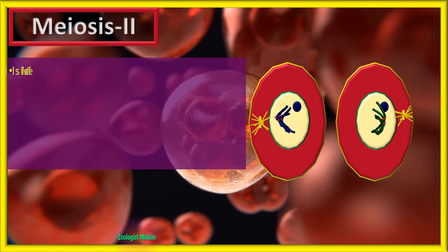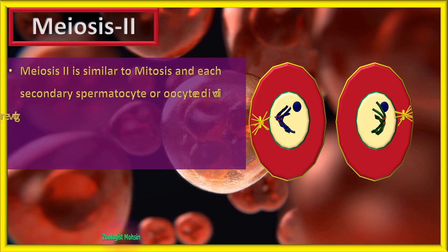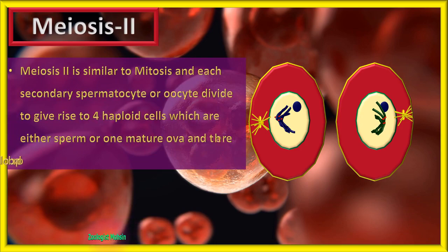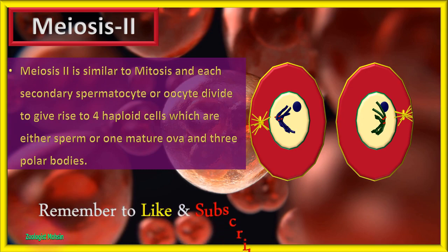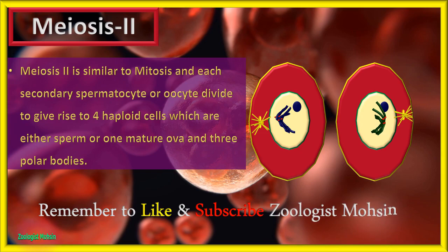Meiosis 2 is similar to mitosis, and each secondary spermatocyte or oocyte divides to give rise to four haploid cells — either sperm or one mature ovum and three polar bodies. To understand crossing over and mitosis in detail, you can watch our other videos on the channel. Remember to like and subscribe to Zoologist Mohsin. Thank you.